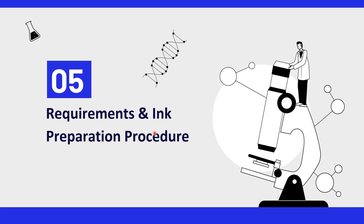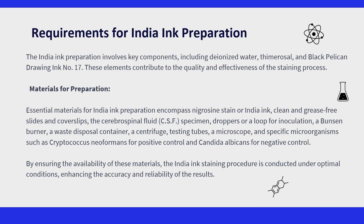To delve into the requirements for preparing India ink, let's break down the components. First, deionized water is purified water without ions, ensuring a clean base for ink preparation. Then comes thimerosal, a preservative used to prevent microbial contamination in the ink. After that, black Pelikan drawing ink number 17 is the core ink ingredient, critical for achieving the desired staining effect. Next comes nigrosine, the primary staining agent.